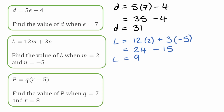For this next question, we've got P is equal to Q times bracket R minus 5. We want to find the value of P when Q is equal to 7 and R is equal to 8. Rewriting and substituting: because Q is on its own, I can just put the 7 in on its own. Then we have the open bracket, R which is 8, take away 5. Following our order of operations, we simplify the bracket first: 8 take away 5 is 3. That leaves us with 7 times 3 in the bracket, which is 21. So P is equal to 21.